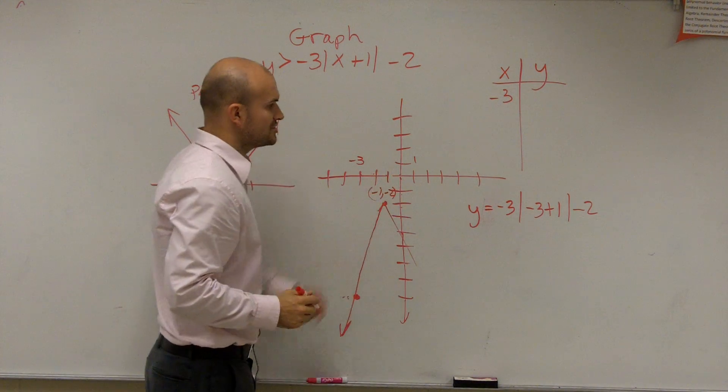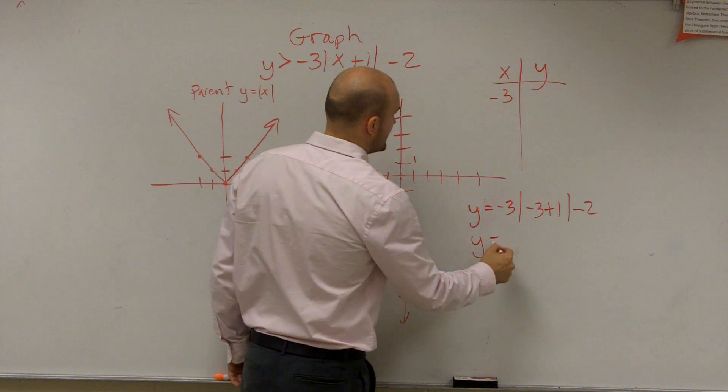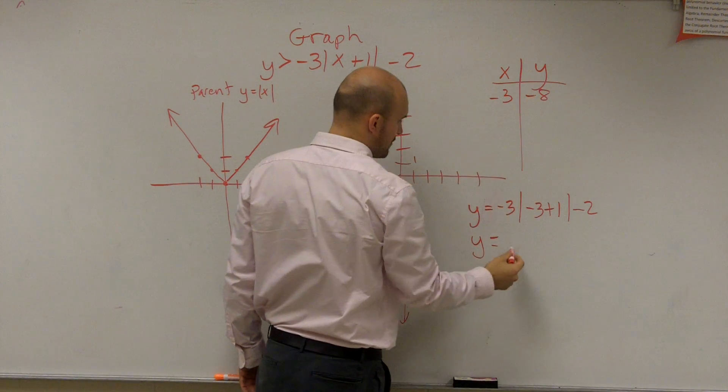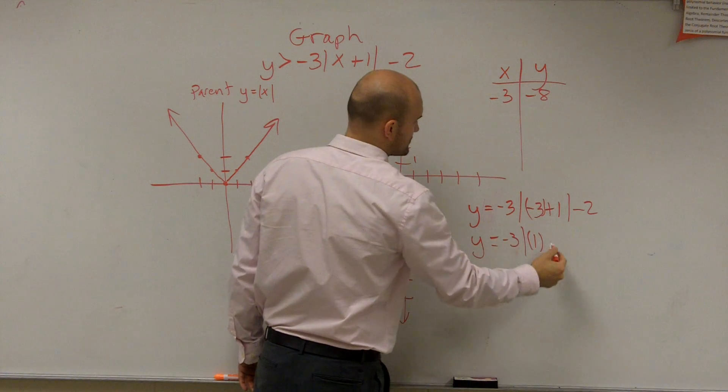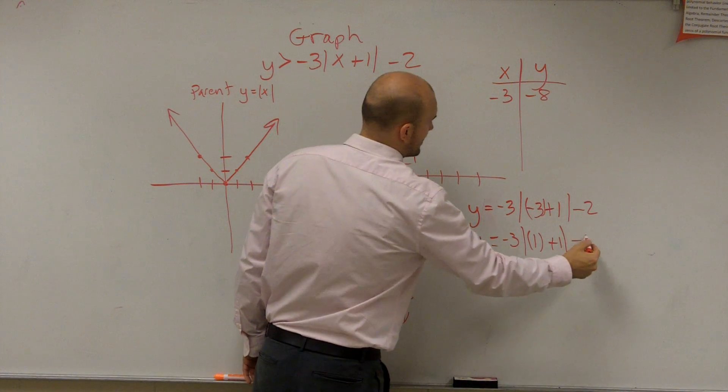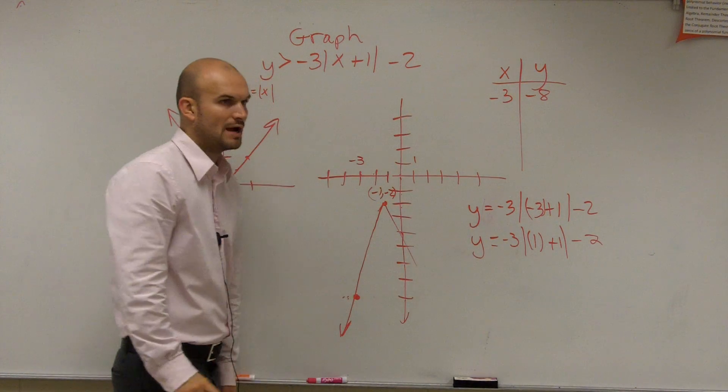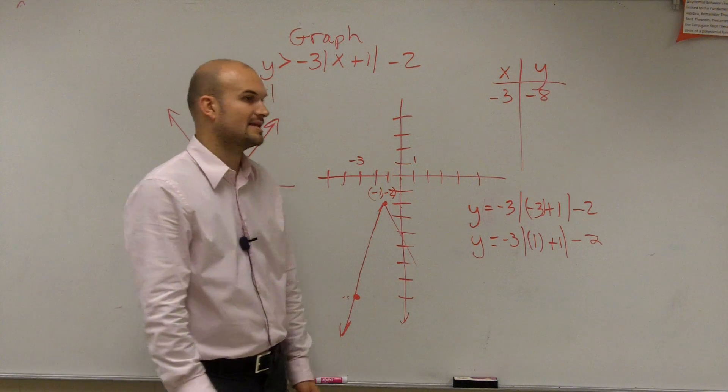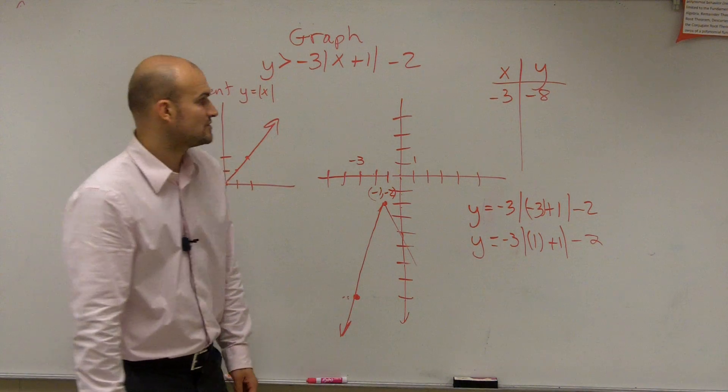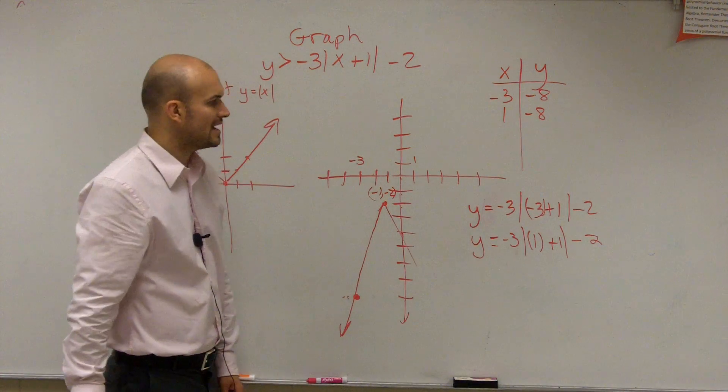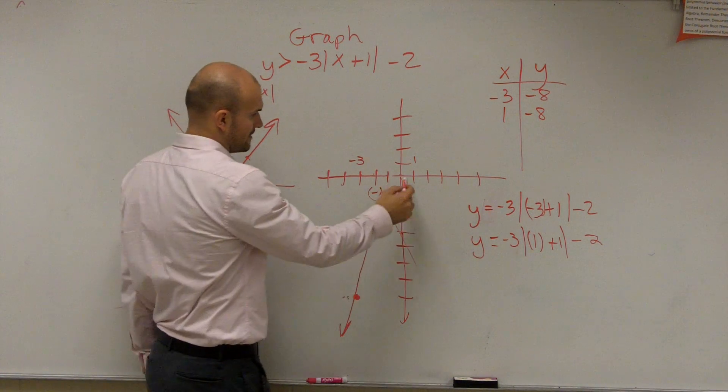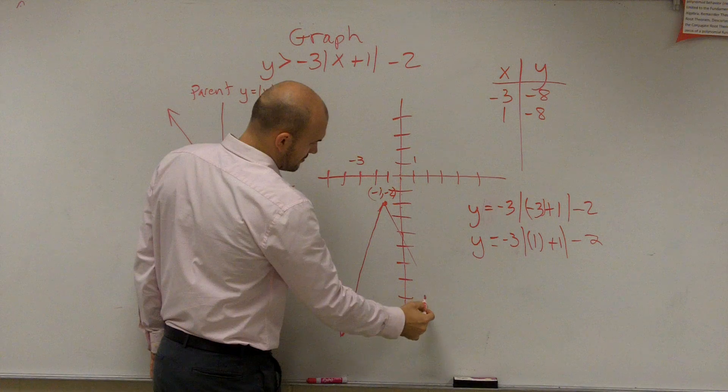OK, and then let's check 1. y equals negative 3 times the absolute value of 1 plus 1 minus 2. 1 plus 1 is 2, absolute value of 2 is 2. 2 times negative 3 is negative 6. Negative 6 minus 2 is negative 8. So at 1, it also goes down to negative 8.